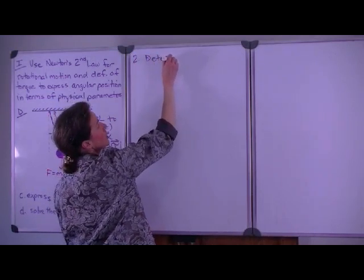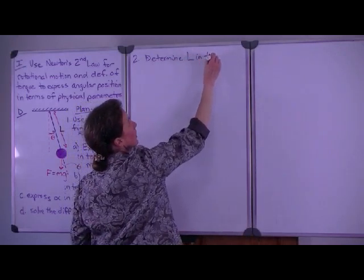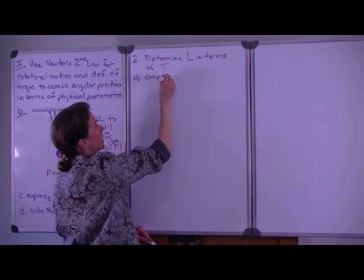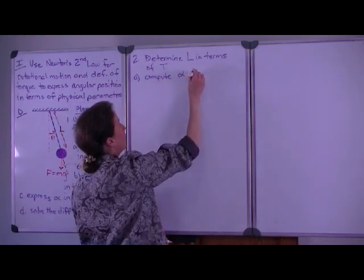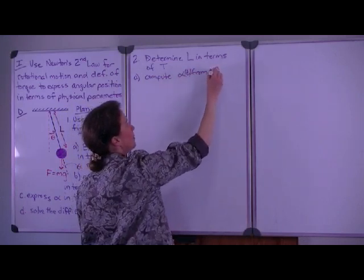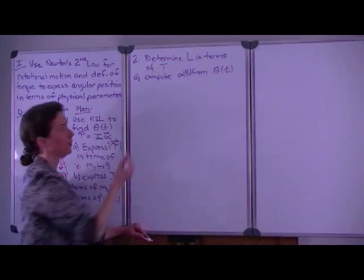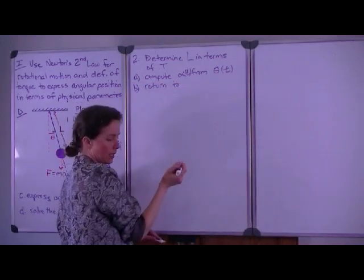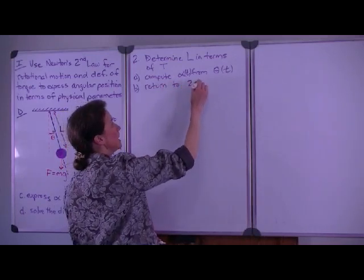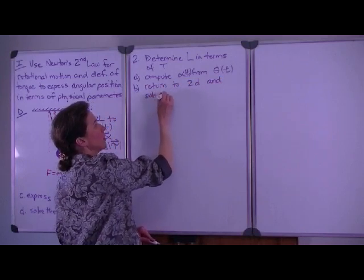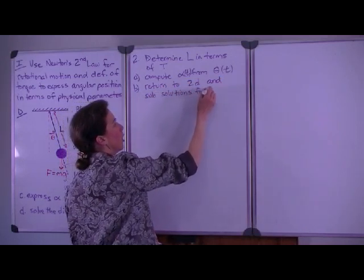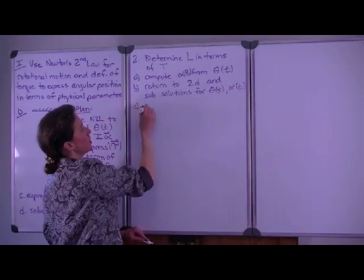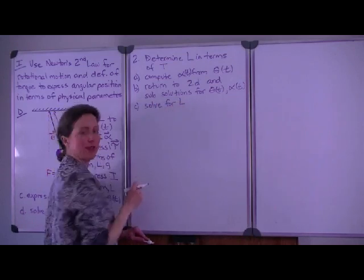That will require us to determine the length in terms of the period. The way that we'll do that is to compute the acceleration in that direction from the position as a function of time, which we will have just solved for. Then we need to return to the differential equation in 2D and substitute our solutions for theta as a function of time and the acceleration as a function of time. At that point, we will be able to solve it for the length and then compute the specific answers.